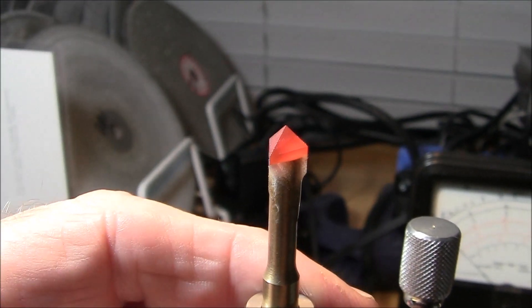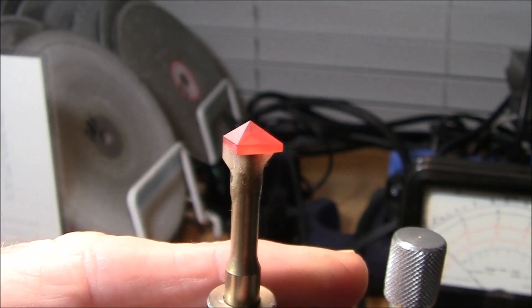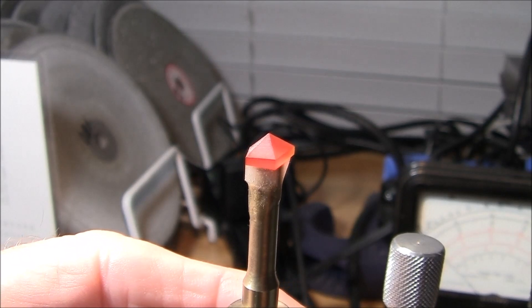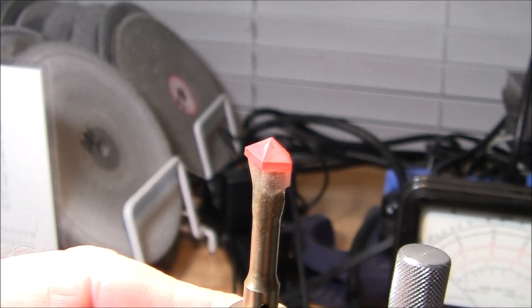I've got all the facets cut with the 600 lap. Next, I'll put on an 8,000 lap and get started on pre-polishing.